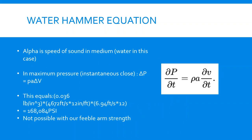Here's the water hammer equation. Note that alpha is the speed of sound in water. Assuming that we can instantaneously close the valve, the maximum pressure we can get is delta P equals rho times alpha times delta V. Plugging in numbers, we get about 170,000 psi, which is not possible with our current conditions.